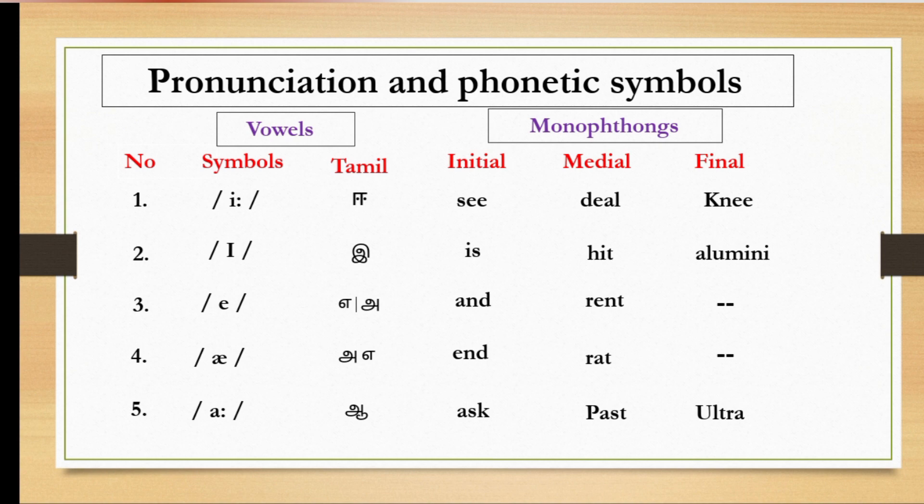Sounds are symbol. Tamil la ebdi nama uccharikkalaan. Plus, initial, medial, final la. Symbols kao na sound ebdi nama pronounce pannalaan ssoolhiittu. Example lau da detaila pahaklaan. Ok, let's see the first one. Second one, ee, ee, as in see, deal, knee.